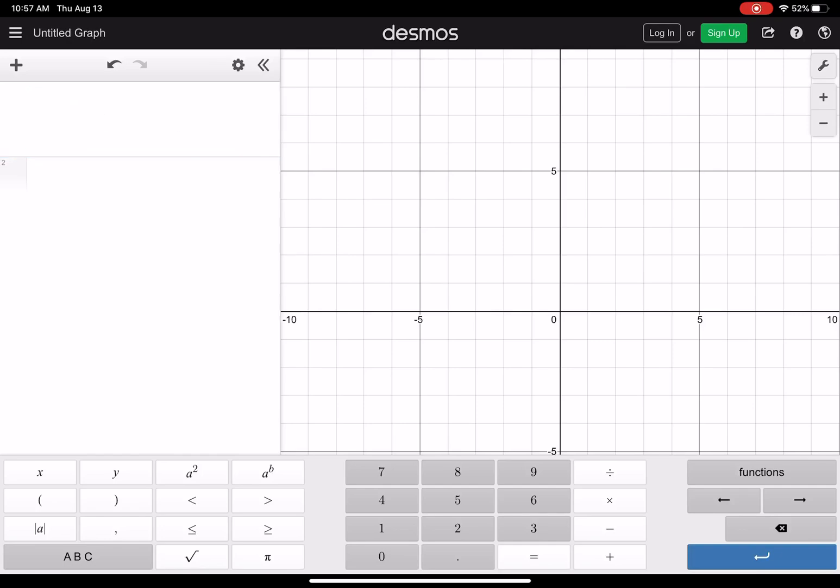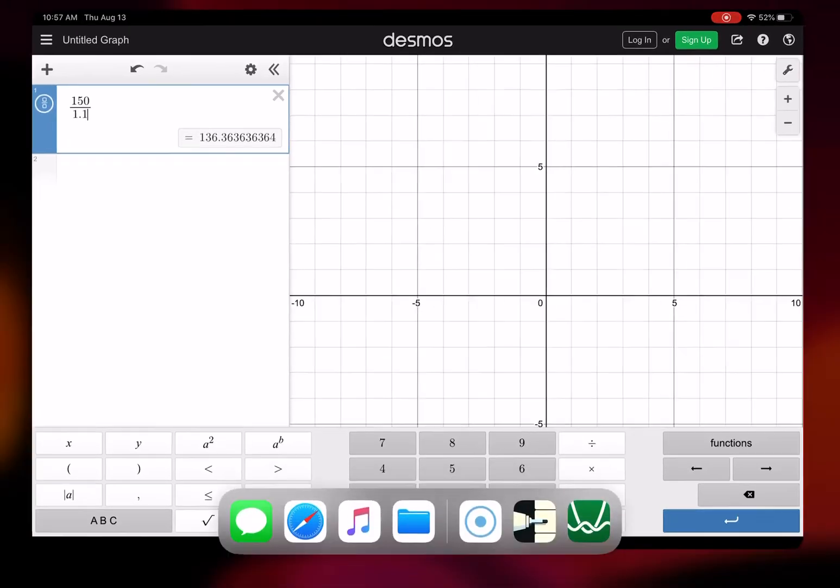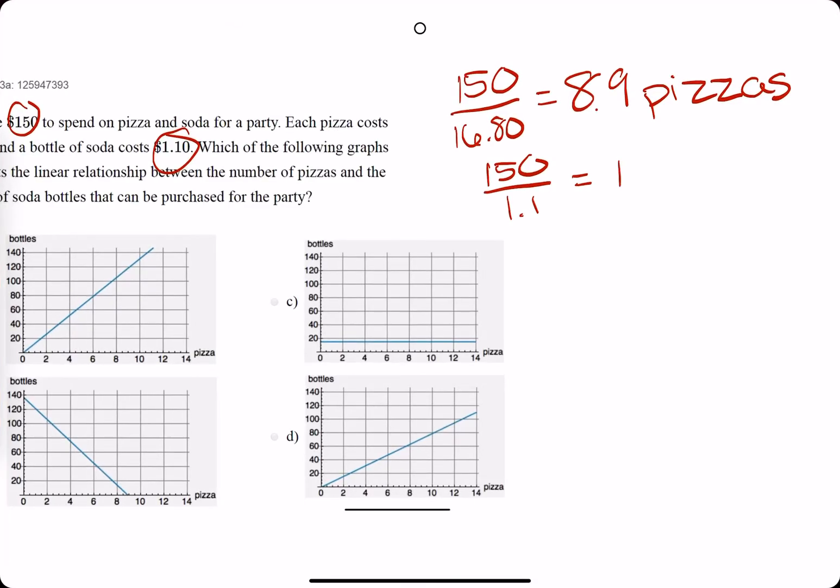$150 over $1.10. Oh boy. $150 over $1.10. We get about 136. So we can buy 136 sodas. That's pretty good.